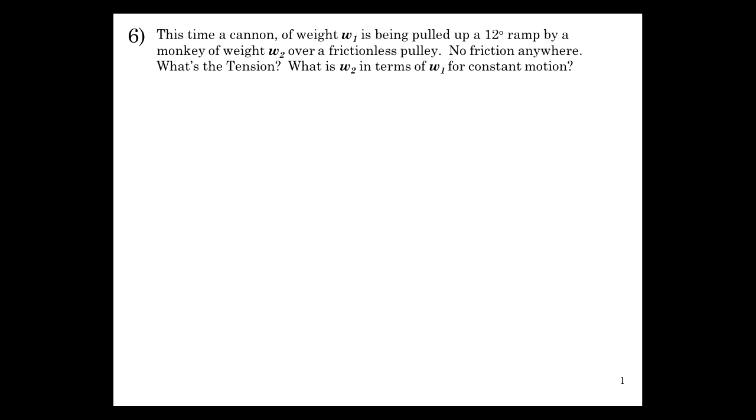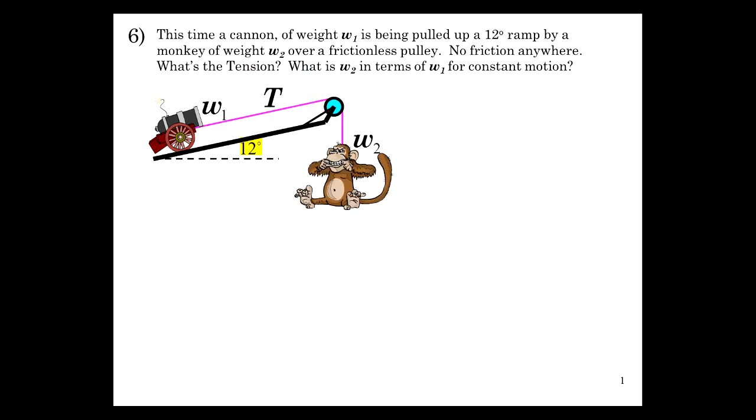In this problem let's check out a frictionless system, one weight pulling the other. Let's get the tension and weight two in terms of weight one. We've got a 12 degree angle for the ramp, frictionless pulley, and cannon that's pulled by a very bad monkey which I'm sure you'll agree with me needs to be punished.